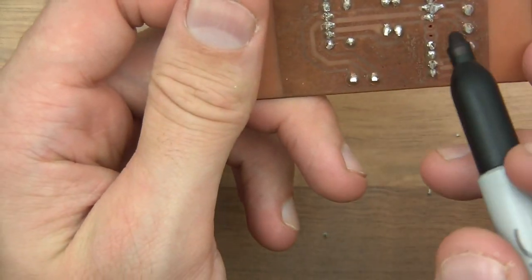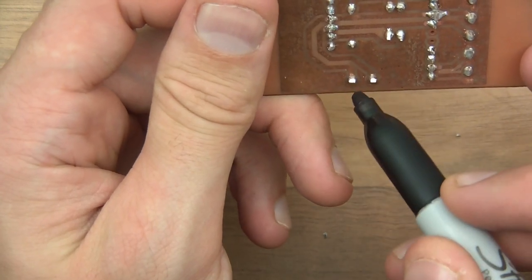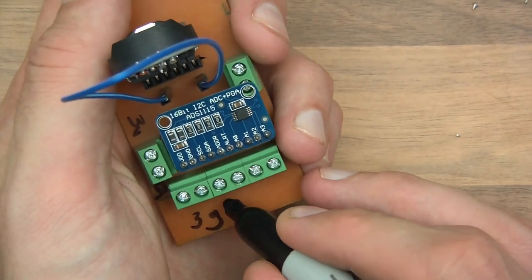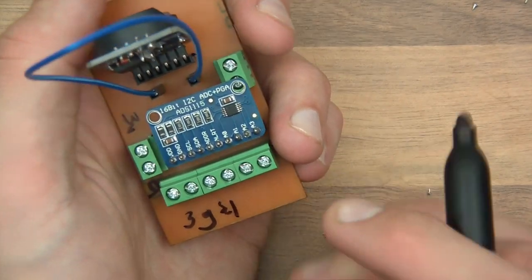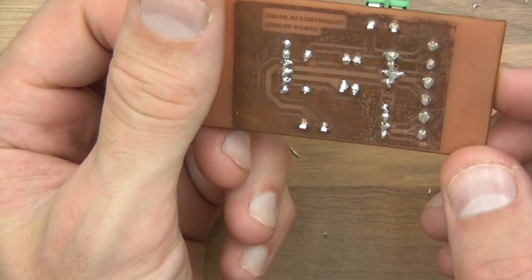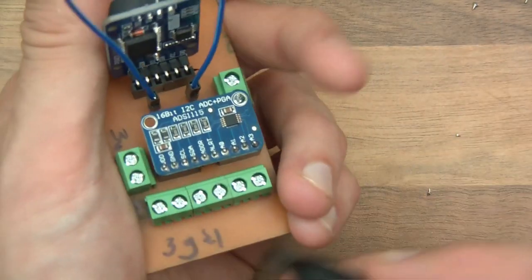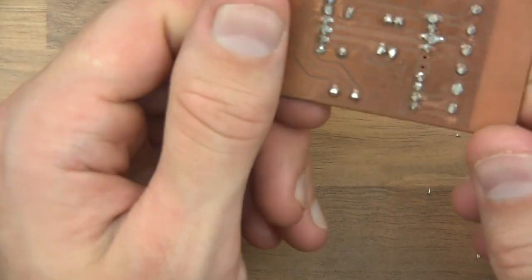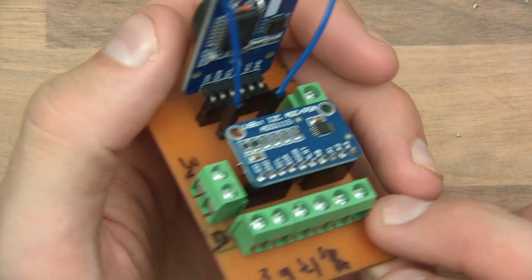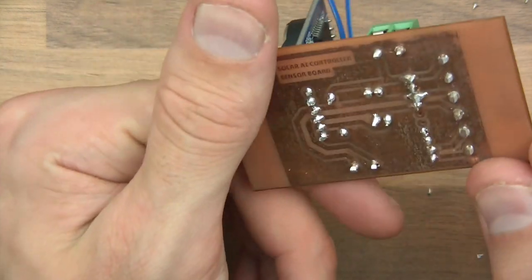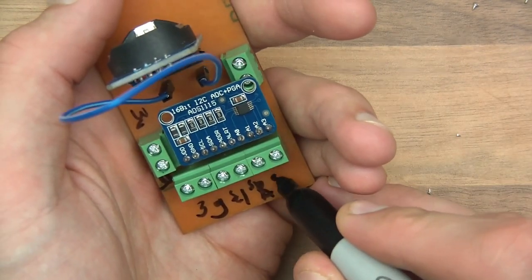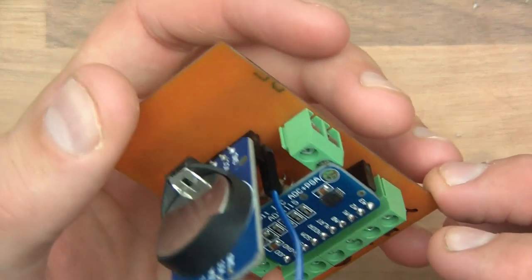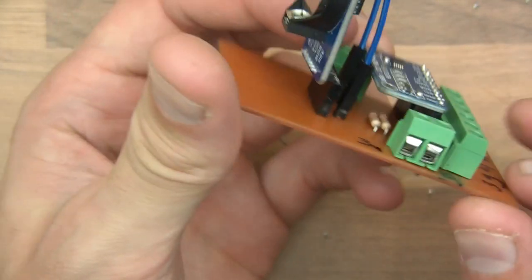Then we have SCL. The next one is SDA. Then over here we've got two more. That's the shunt. I'll just write shh. The labelling is terrible I know.